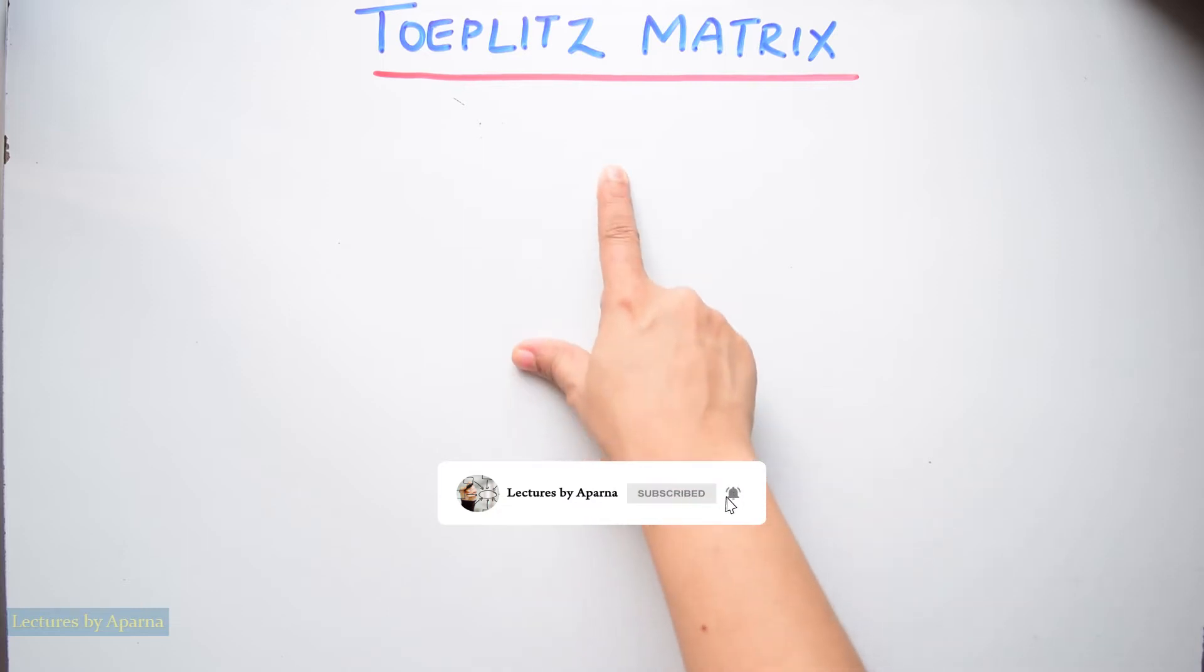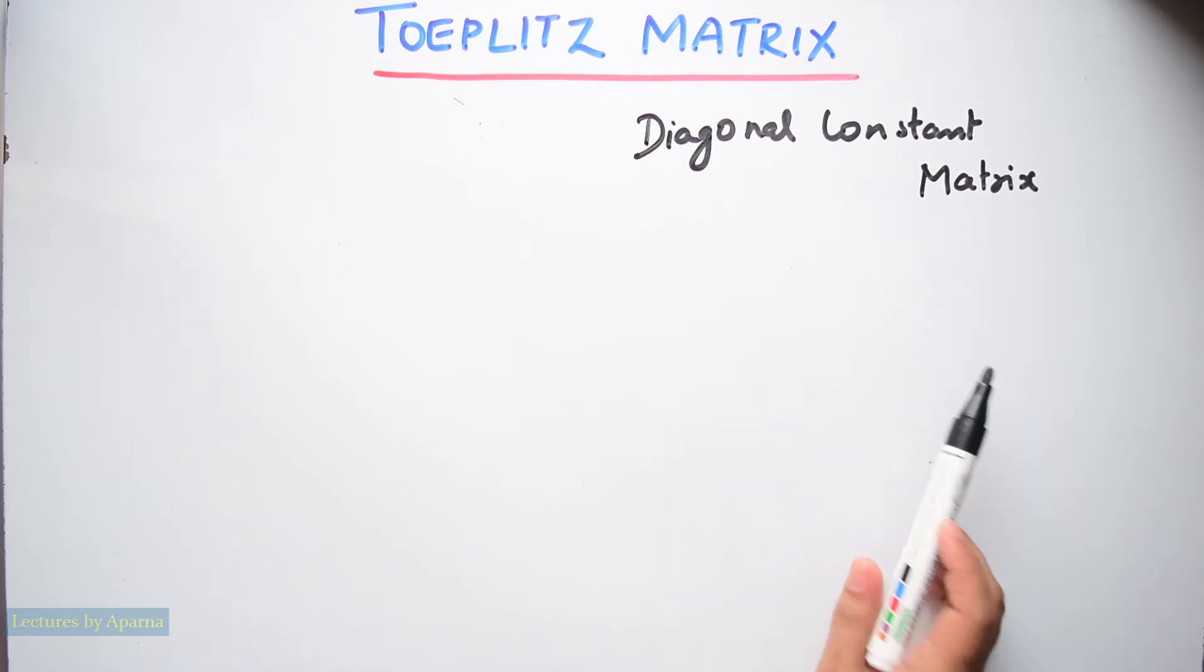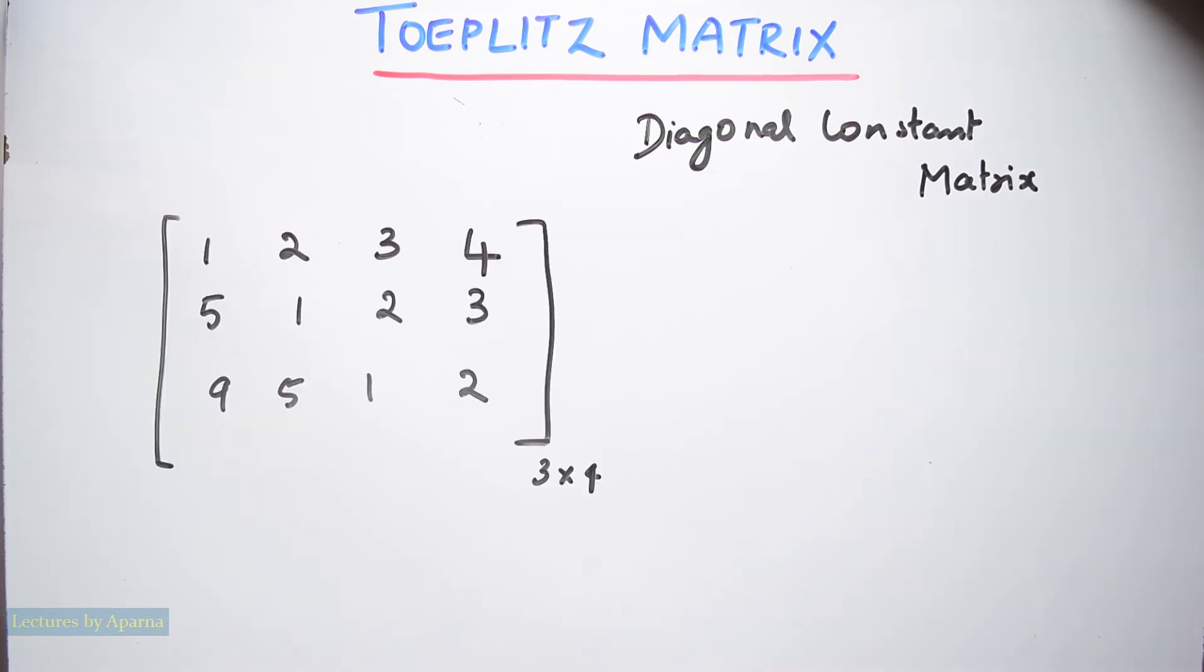Another name for Toeplitz matrix is diagonal constant matrix. I will show an example for Toeplitz matrix. This is a Toeplitz matrix.